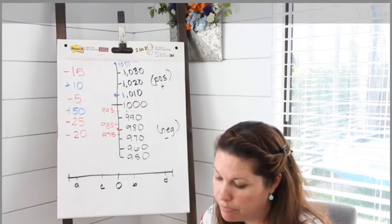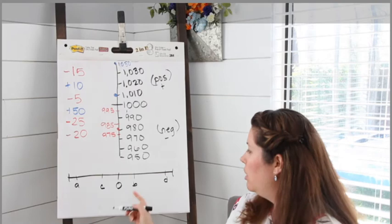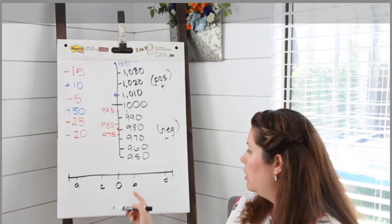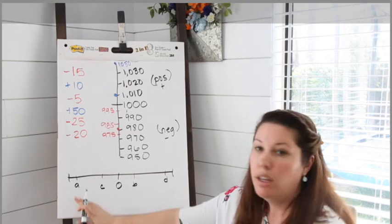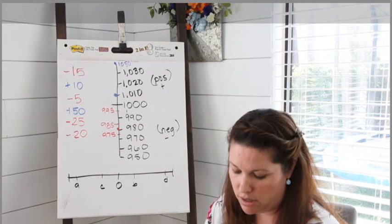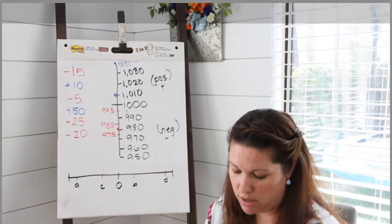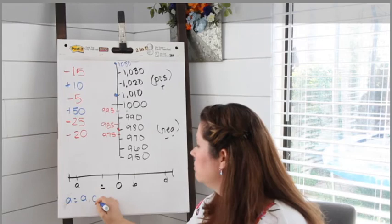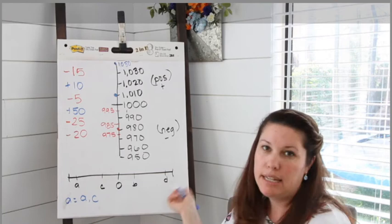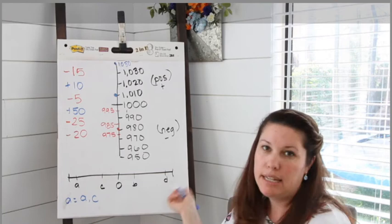Part A: which letters represent negative numbers? We learned that positive is to the right of our zero and negative is to the left of our zero. So which letters represent our negatives? A and C. For part B: which letters represent positive integers? If A and C represent negative, that must mean B and D represent positive. So for part B, the answer is B and D.